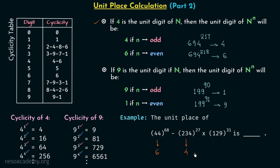For 234 raised to power 27: again we have 4 at the unit place, so we use the same rule. Power 27 is odd, which means 4 is going to be at the unit place. For 129 raised to power 31: we have 9 at the unit place, so we use the rule for nine. The power 31 is odd, and therefore we will have 9 at the unit place. After this, we multiply 4 and 9 to get 36, and then 6 minus 36 equals minus 30, giving us 0 at the unit place. So 0 is our answer.